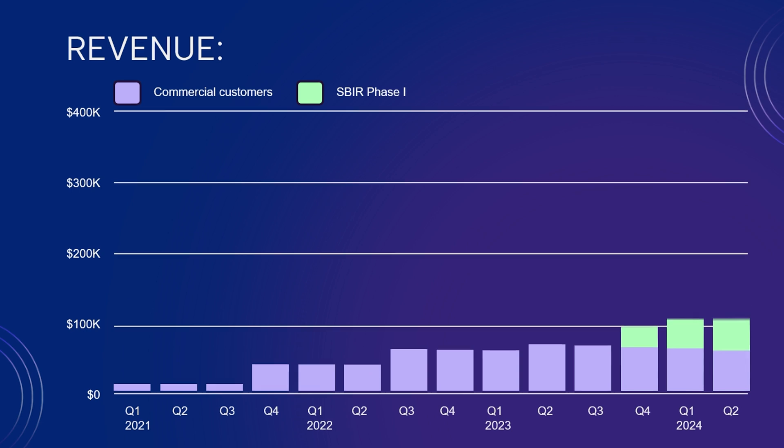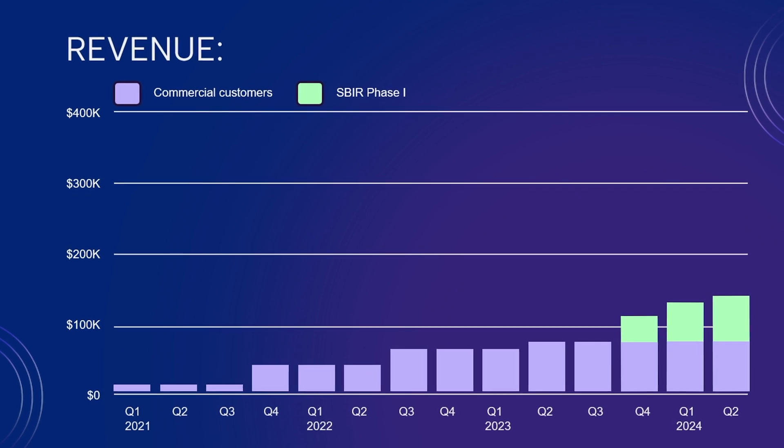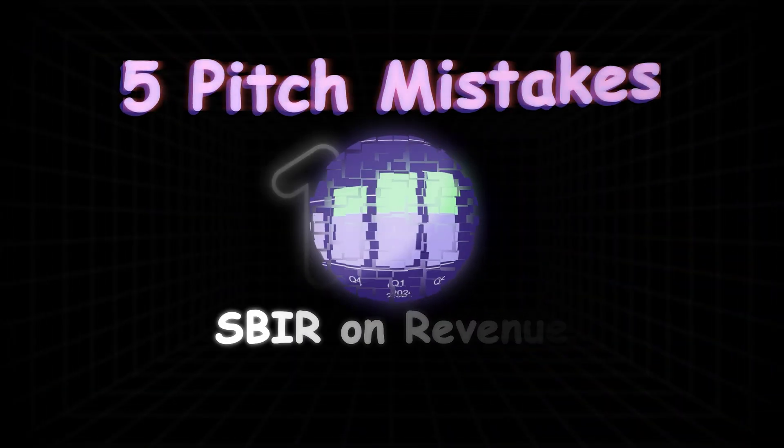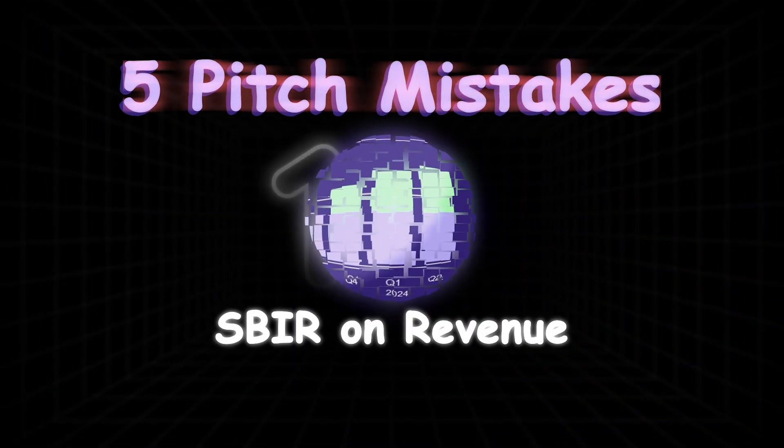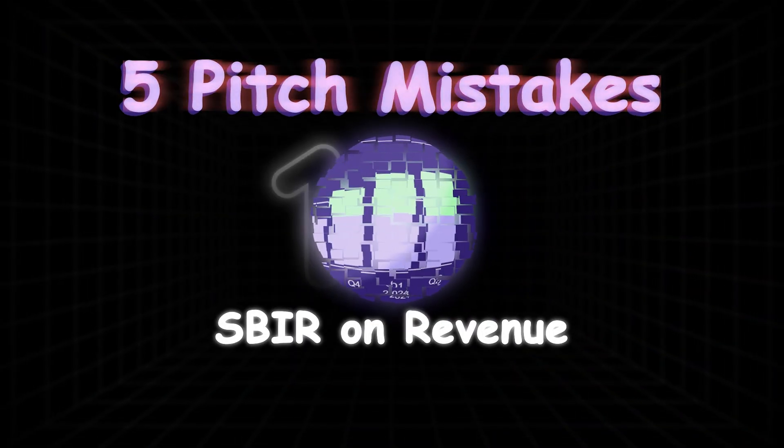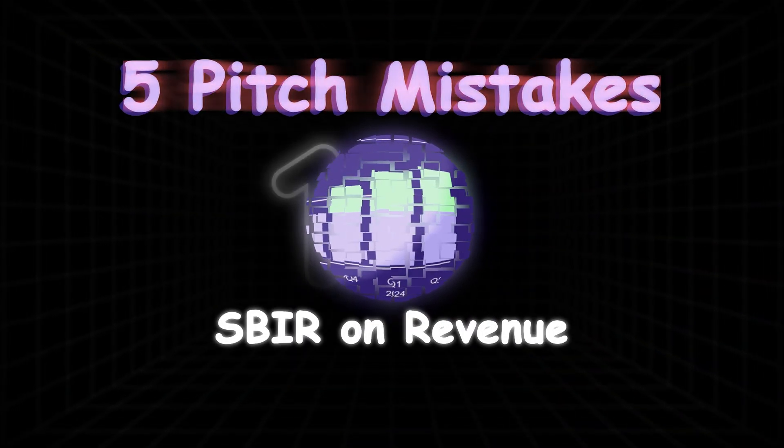Do you see the first mistake? Here it is in full screen. Do you see it now? The company is including SBIR dollars in their revenue slide. Don't do this.